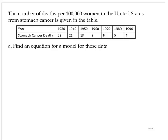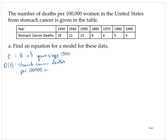The number of deaths per 100,000 women in the United States from stomach cancer is given in a table of data, and we're asked to find an equation for a model for these data. The first thing you want to do in any modeling problem is look at the data. We'll let t represent the number of years since 1900, and d(t) represent the stomach cancer deaths per 100,000 women in the US. Let's plot these points using our graphing calculator and see what we find.